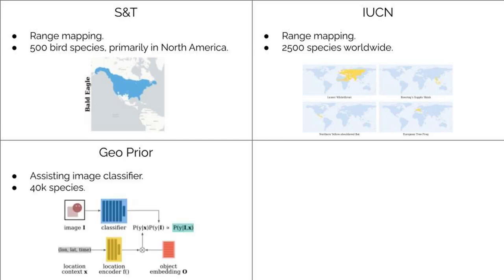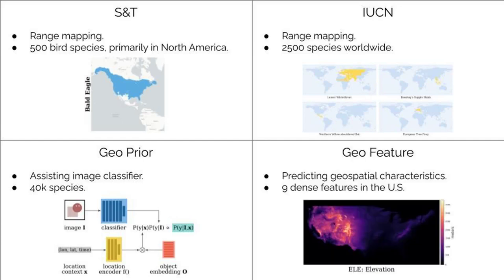In the GeoPrior task, we use the range predictions to assist an image classifier on a fine-grained 40,000-way classification task. The GeoFeature task is a transfer learning task where we use the learned geospatial representation to predict nine dense features, like elevation, across the continental US.